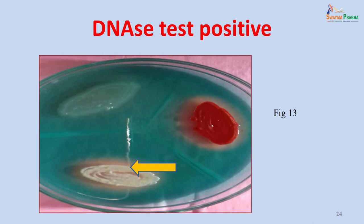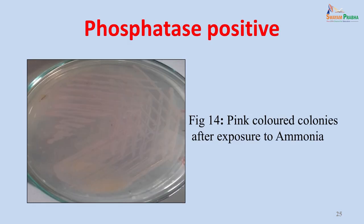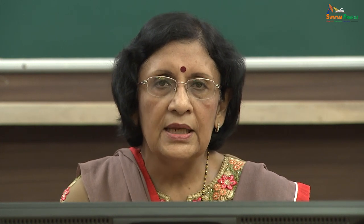The DNase test uses a medium containing DNA; if the organism produces DNase, you get a clear area around the colonies indicating a positive result. This particular organism shown is DNase test negative, so there is no clearing around the colonies. For the phosphatase test, diphosphates are incorporated into the medium; if the organism produces phosphatase, the diphosphates are broken down, and when the plate is exposed to ammonia you get pink-colored colonies indicating phosphatase production.